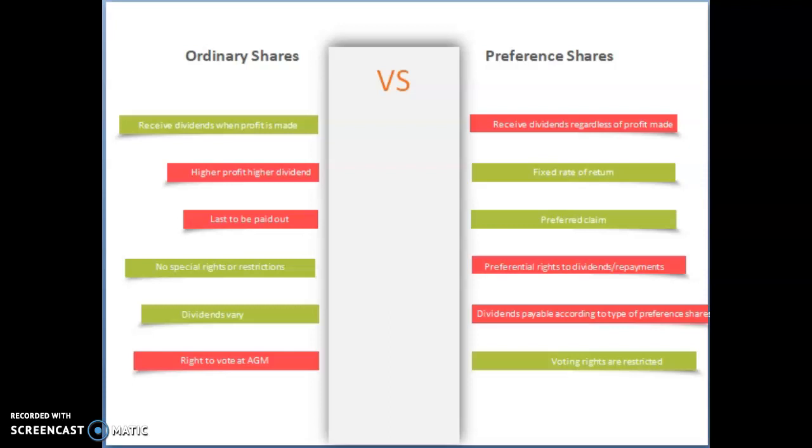Normally, with ordinary shares, the higher the profit, the higher the dividend. Now, remember with preference shares, it is a fixed rate of return that's paid on this type of share.